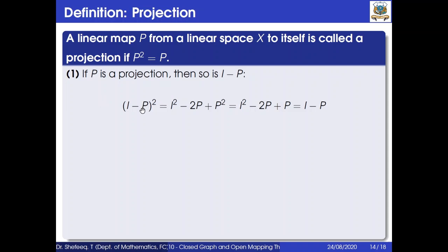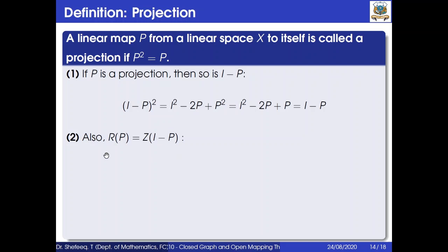We have (I − p)² = I² − 2p + p² = I − 2p + p = I − p, since p is a projection so p² = p. Therefore I − p is also a projection. The next result is that R(p) = Z(I − p), where R(p) is the range space and Z(I − p) is the null space.